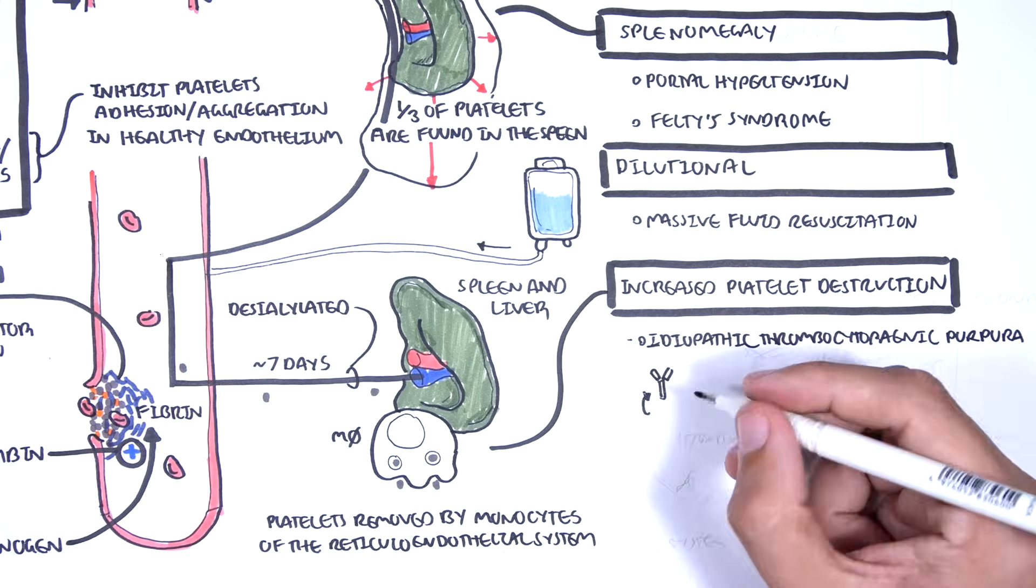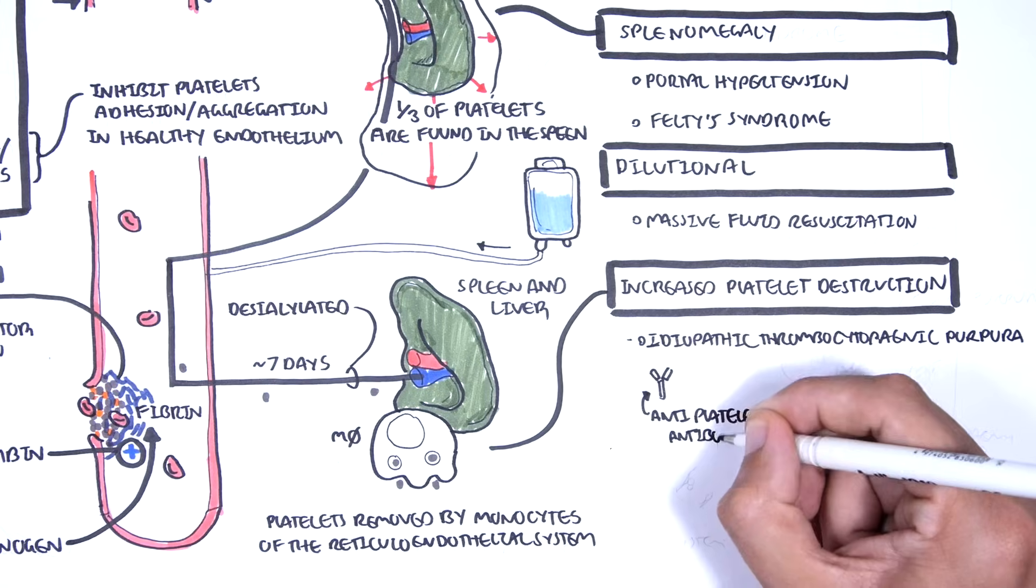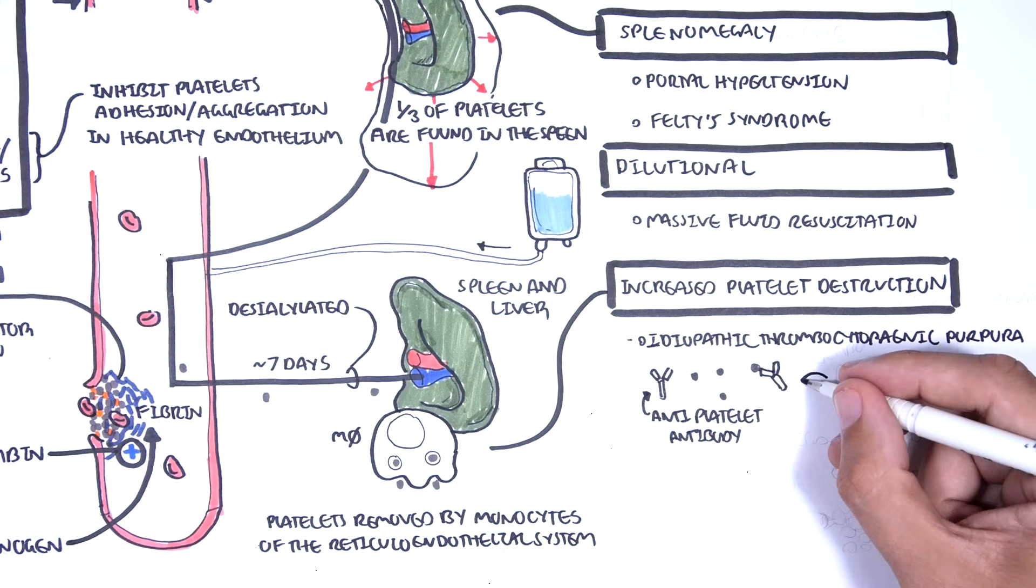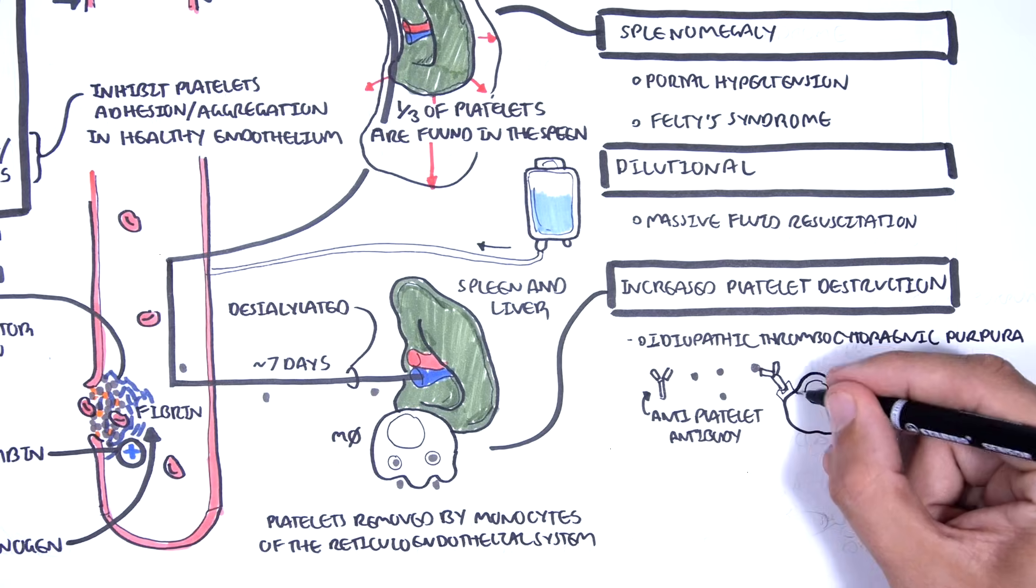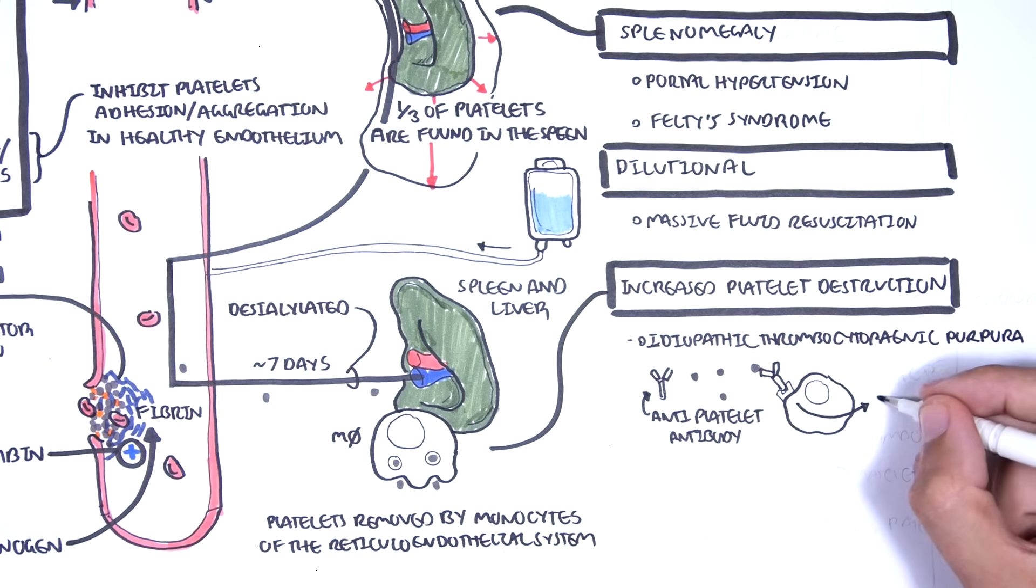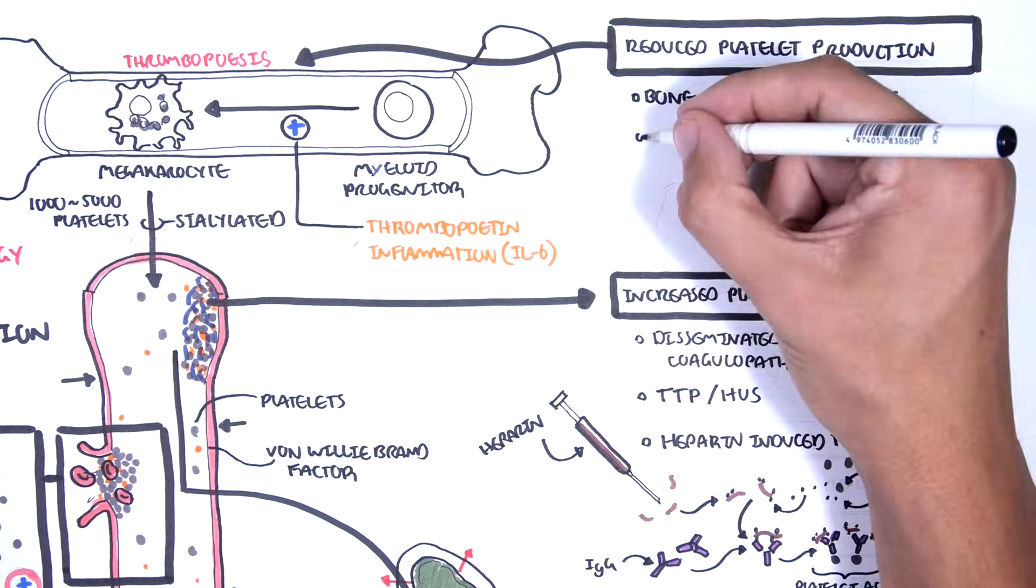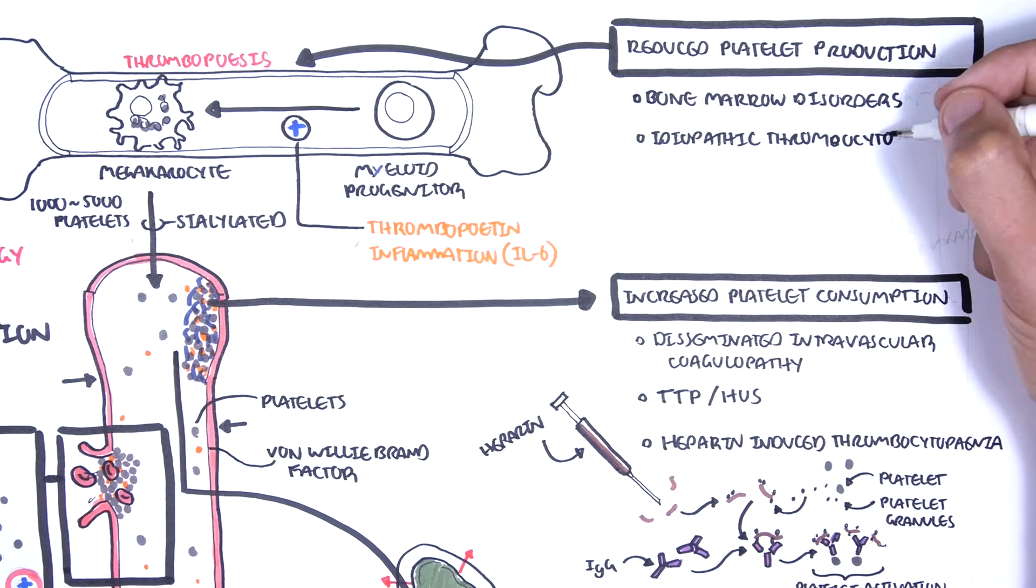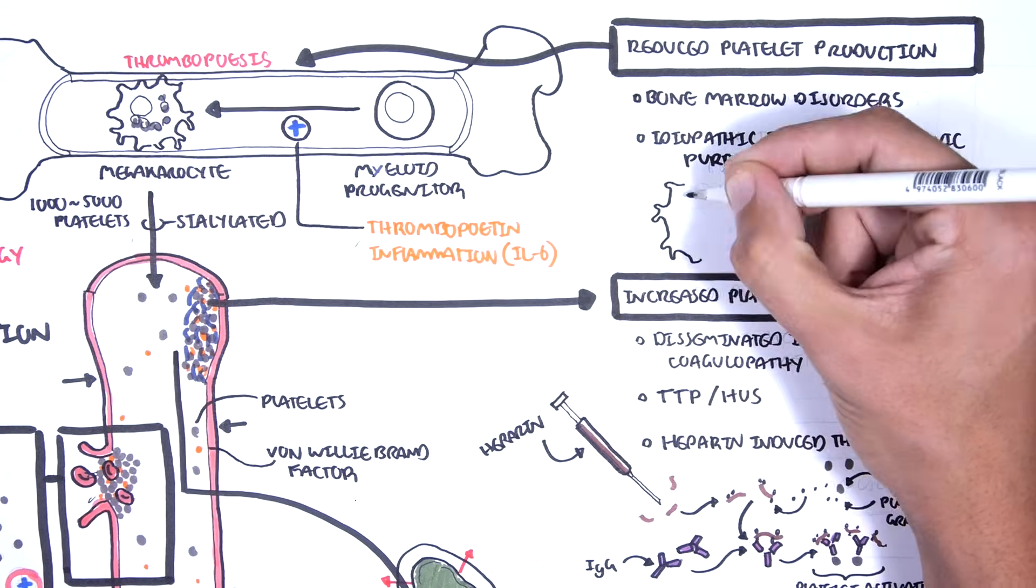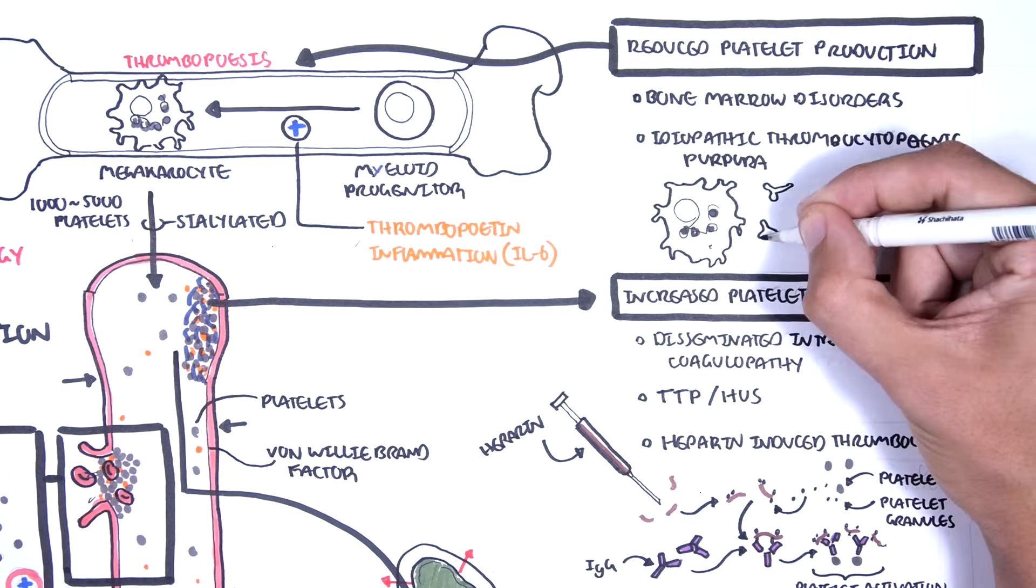ITP occurs when antibodies attack platelets, increasing their clearance rates. Drug-induced ITP is also important to remember. Important to note that a variant of ITP can include the antibodies attacking the megakaryocytes in the bone marrow, which means less platelet production.